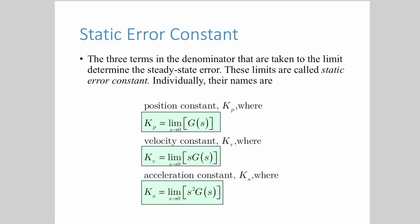There are three types of static error constants: position constant Kp, velocity constant Kv, and acceleration constant Ka. For the Kp it is defined as limit s approaching zero for the G(s), for the Kv is limit s approaching zero for the s G(s), and finally for the Ka is limit s approaching zero for the s squared G(s).